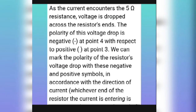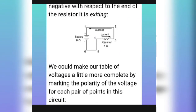As the current flows through the five ohm resistance, voltage is dropped across the resistor, and the polarity of this voltage drop is negative at point four with respect to positive at point five. We can mark the polarity of a resistor voltage drop with negative and positive symbols in accordance with the direction of current — whichever end of the resistor the current is entering is negative with respect to the end of the resistor it is exiting.